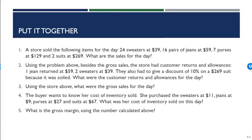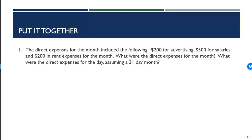Part three has you calculate your gross sales. Thinking back to our income statement, we have our gross sales number. Part four asks us to calculate our cost of goods sold — the cost the retailer paid for each of the items in her store. Part five has you calculate the gross margin.